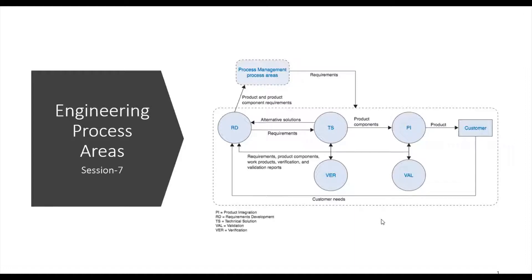Engineering Process Areas also integrate the processes associated with different Engineering Disciplines into a single Product Development Process, supporting a Product Oriented Process Improvement Strategy. Such a strategy targets essential Business Objectives rather than specific Technical Disciplines. Now we are going to discuss the details of Engineering Process Areas.